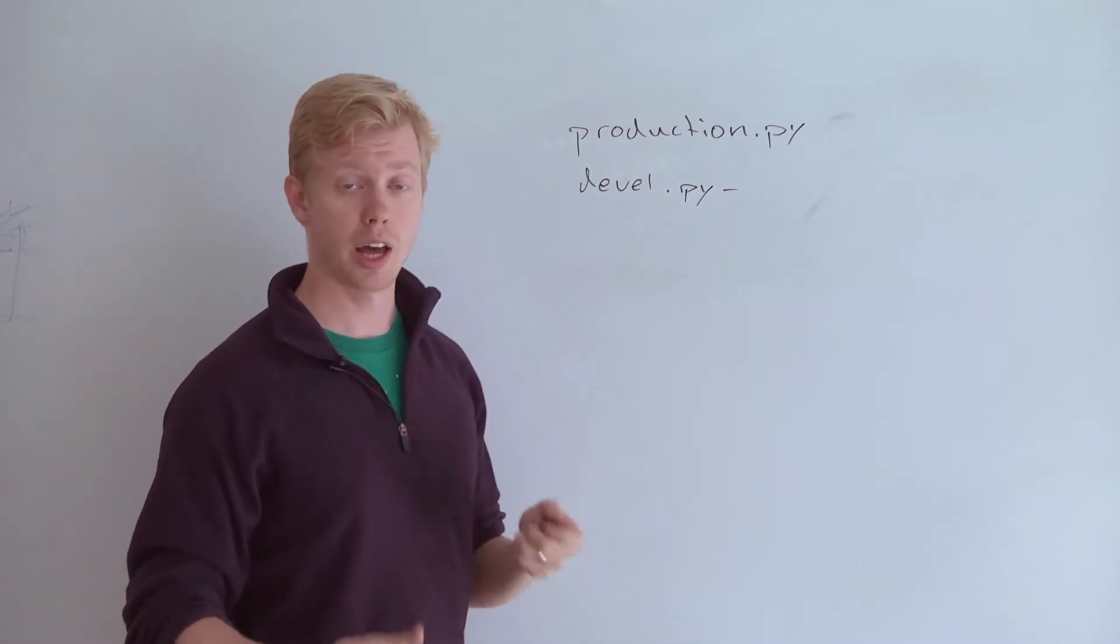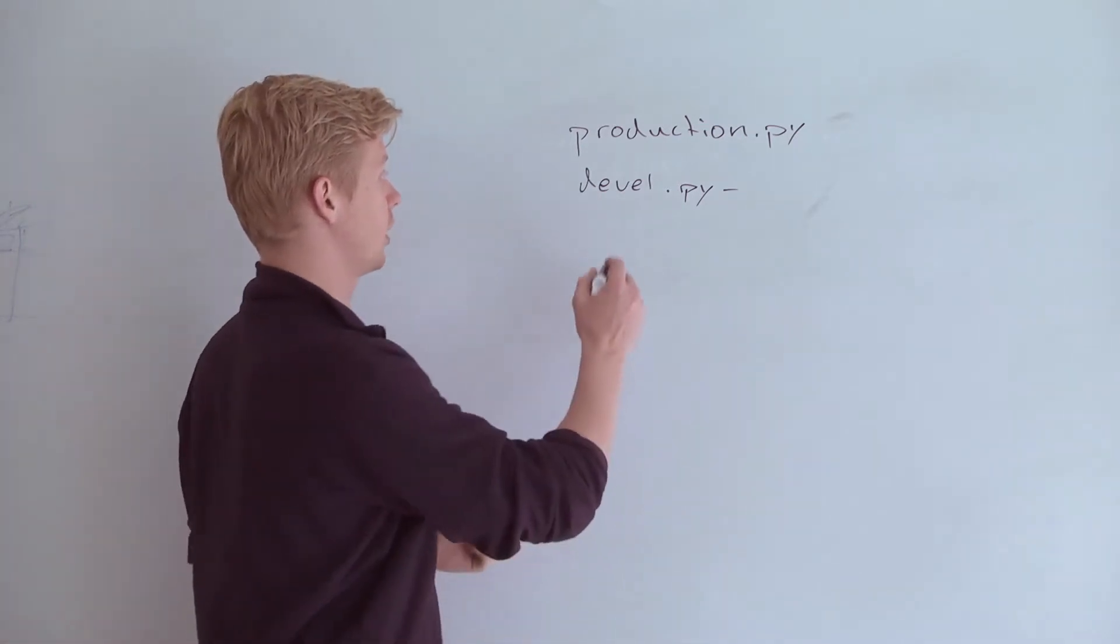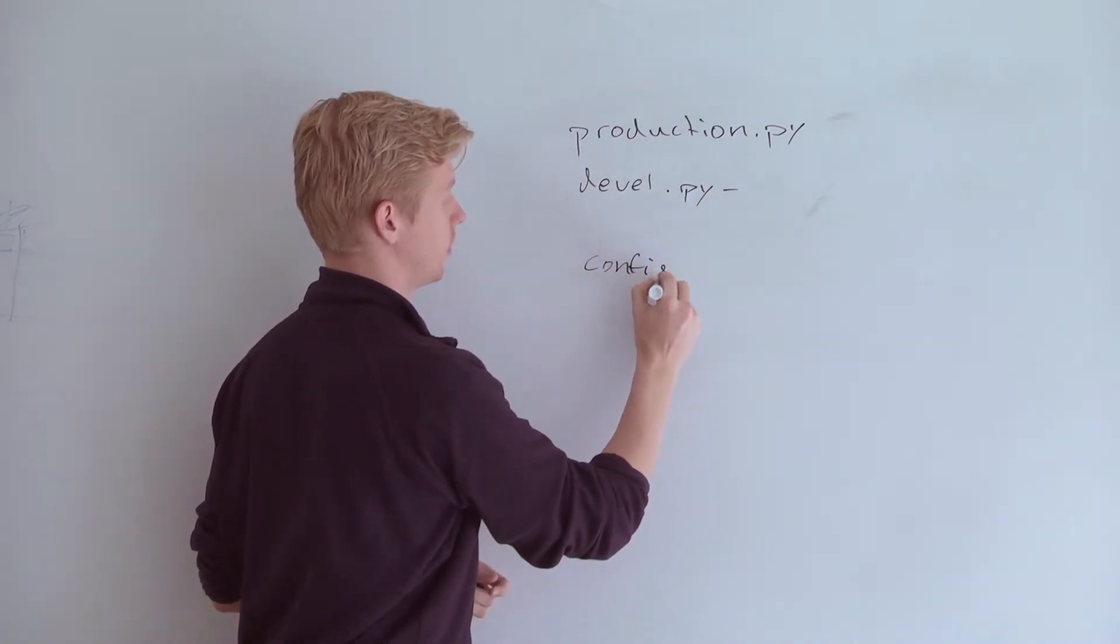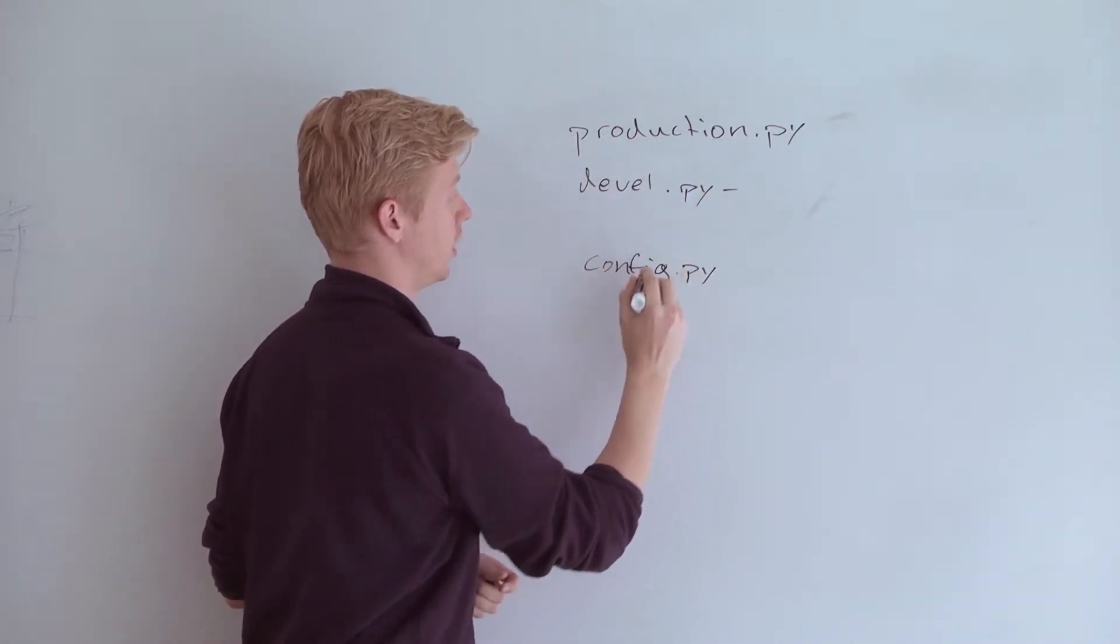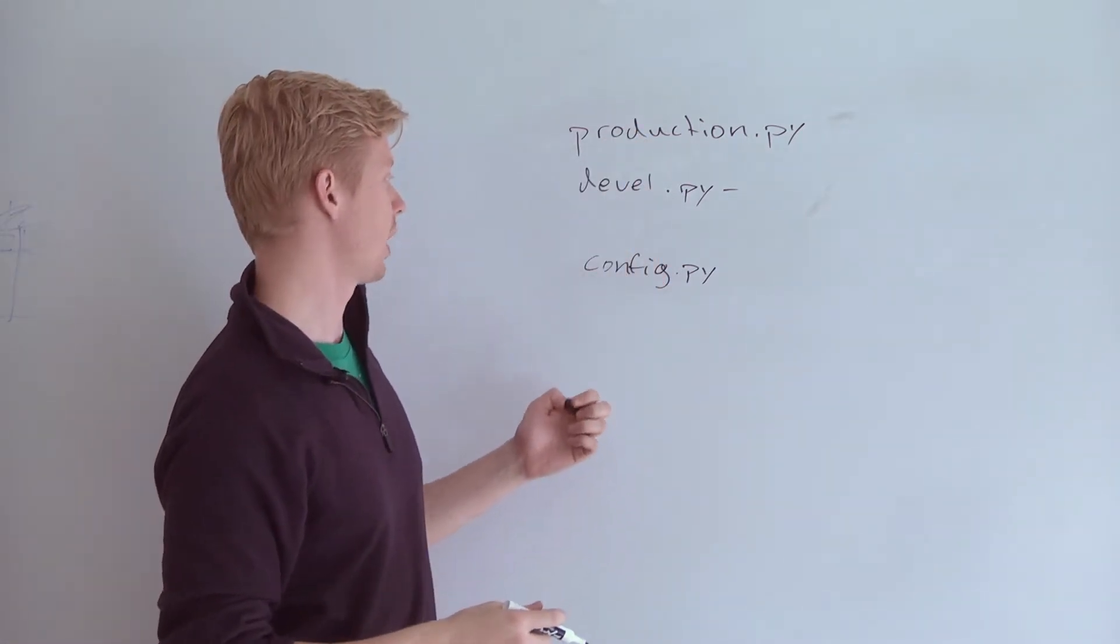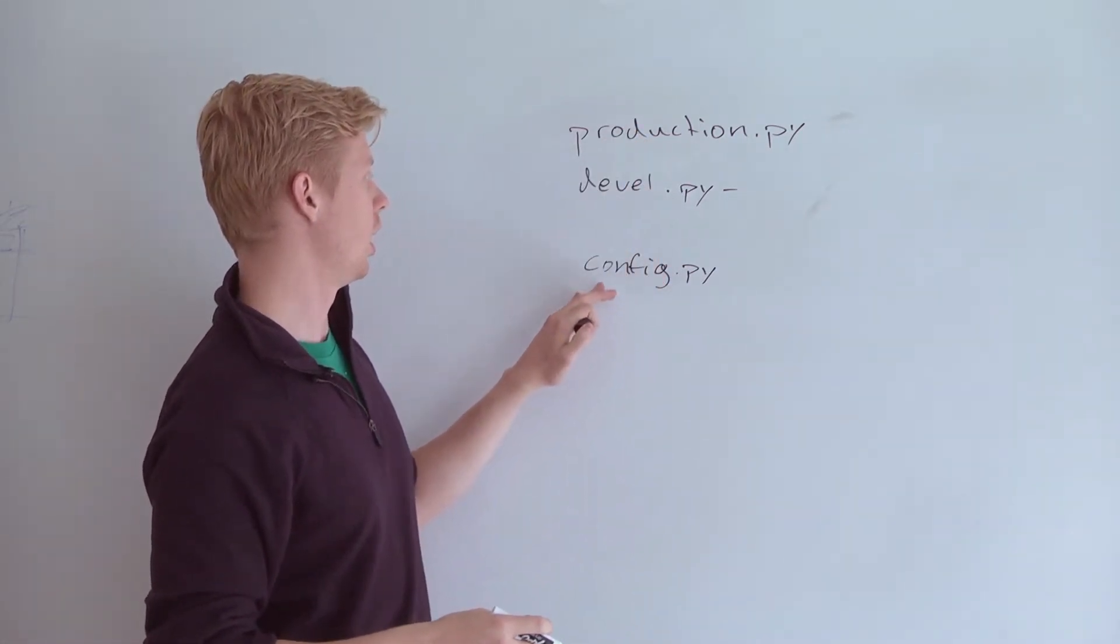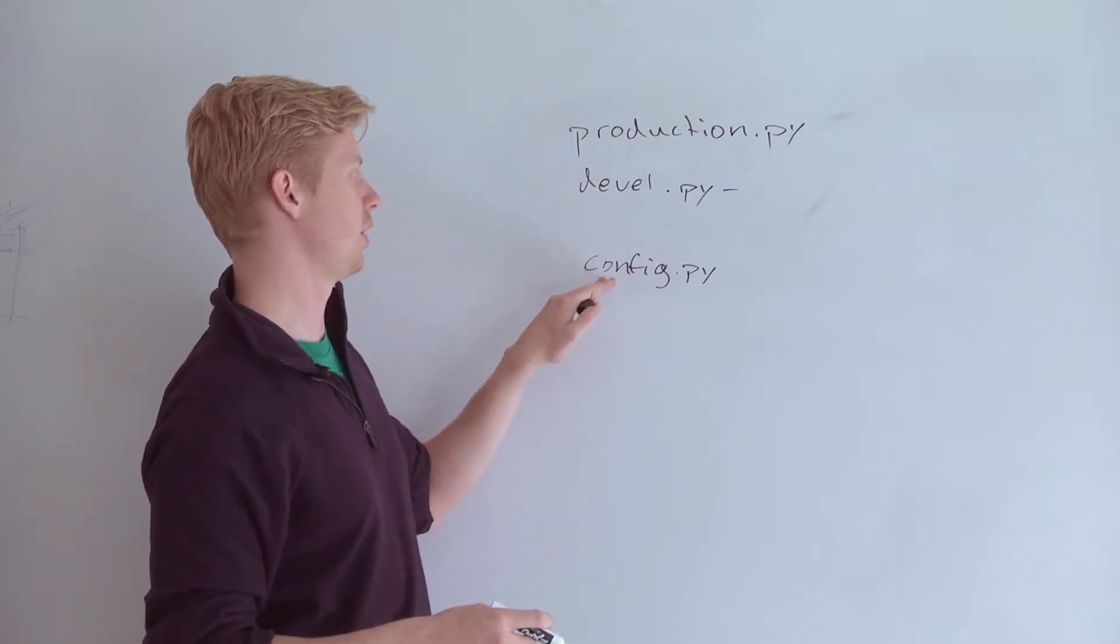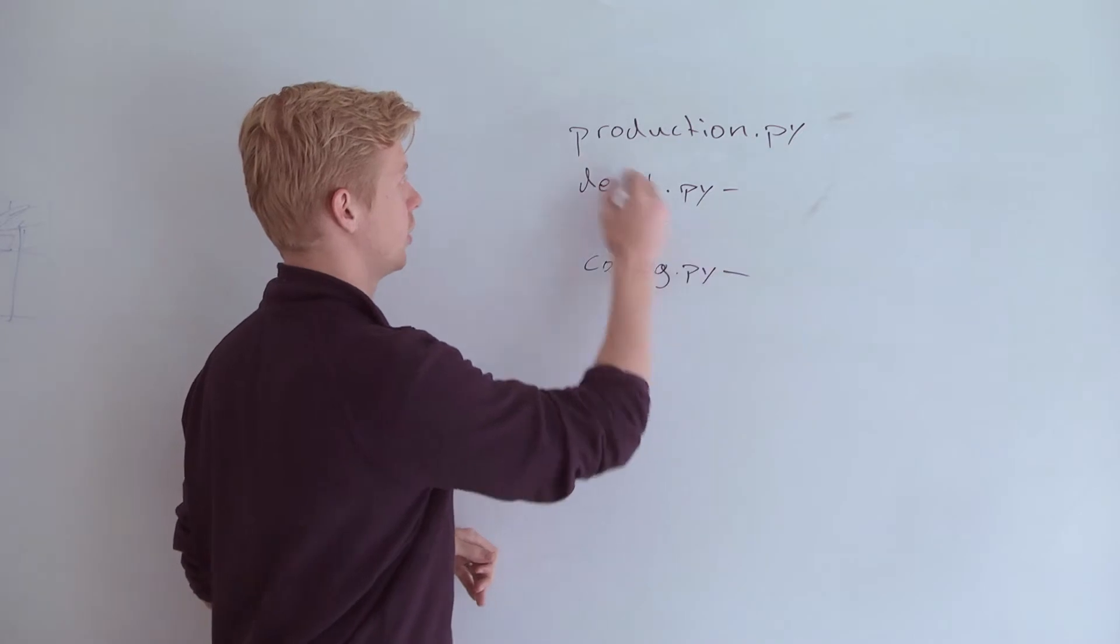And then when we deploy code on our own machines, we just symlink to config.py, whichever one we want. So I think our apps, by default, look for develop.py. And if it's not there, it uses config.py, which may symlink to production.py.